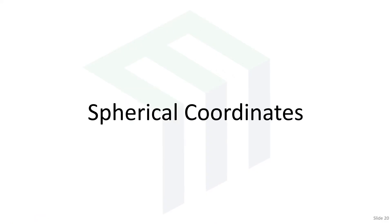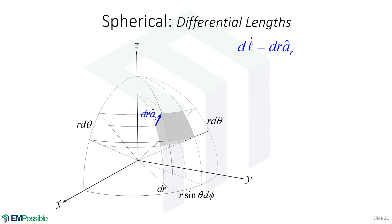Spherical coordinates. We'll repeat exactly what we did for Cartesian and cylindrical coordinates, but now in spherical coordinates. We show our spherical coordinate system and identify a differential volume. The first differential length is in the r direction. Differential length is a vector with a magnitude and direction. The magnitude is dr, and the direction is the unit vector in the r direction — so dr in the ar direction along this edge of our differential volume.